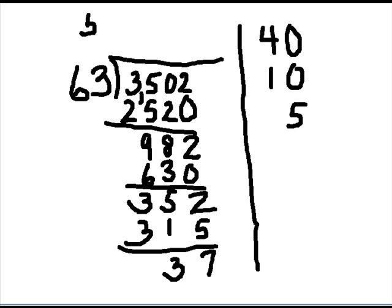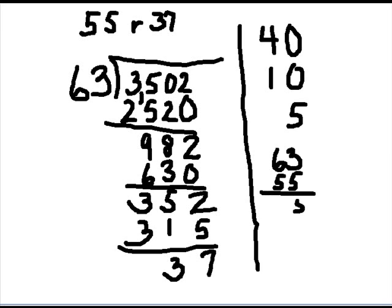55 remainder 37. Let's see if it works. 63 times 55. 5 times 3 is 15. Put down the 5. Carry the 1. 5 times 6 is 30. Plus 1 is 315. So it worked. So we're going to put our 315 again. Squeeze our 3 in here.